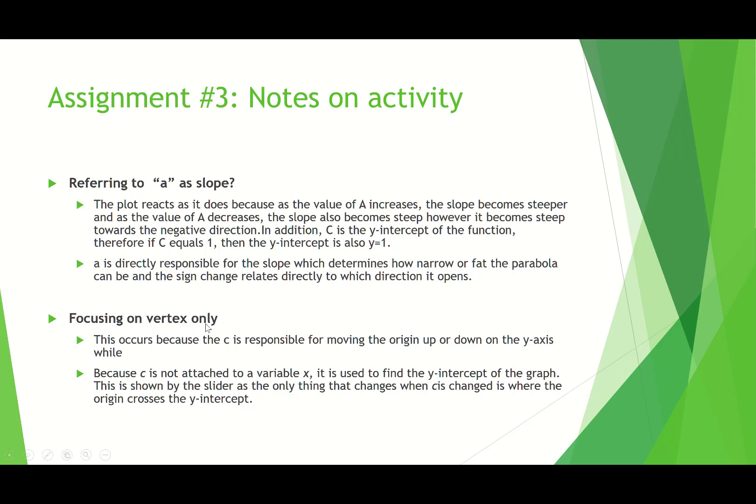Another thing here is, as I said earlier, several of you said that when you change c, the origin moves up and down. One person wrote, this occurs because c is responsible for moving the origin up or down the y axis. So why is that the case? And it's not just c. It's not just the vertex moving up and down. It's every point on the parabola. Because c is not attached to a variable x, I think what you mean there is it's an additive component rather than a multiplicative component. It's used to find the y-intercept of the graph. This is shown by the slider as the only thing that changes when c is changed is where the origin crosses the y-intercept. So again, that's not the case. It's not the only thing that changes. Every y-value changes additively when c is changed.